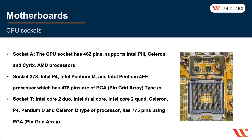Socket 378 is mostly for the Pentium 4 with 478 pins. Socket T is for the later Pentium D, Celeron D, as well as the Core 2 Quad and Core 2 Duo processors.